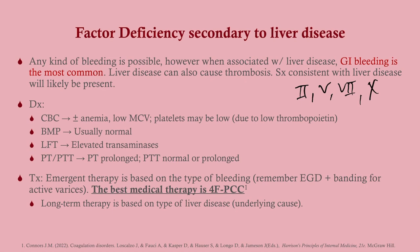For workup, get a CBC, BMP, LFTs, PT, and PTT — basic labs for a patient with liver disease who is also bleeding. You may see anemia and low platelets, since thrombopoietin is made in the liver — liver disease leads to low thrombopoietin and subsequently a low platelet count. BMP is usually normal. LFTs will invariably show elevated transaminases. PT/PTT: you'll see prolonged PT with normal or prolonged PTT — same reason as before: factor 7 drops first due to its shortest half-life.